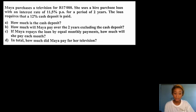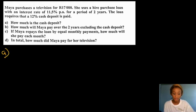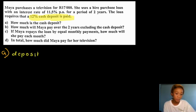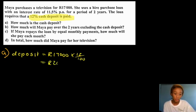Maya purchases a television for 17,000 rands. She uses a hire purchase loan with an interest rate of 11.5% per annum for a period of two years. The loan requires that a 12% cash deposit is paid. The first question asks: how much is the cash deposit? The deposit equals 17,000 times 12 over 100, which gives us 2,040 rands.